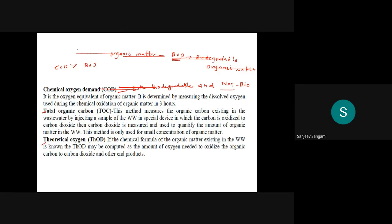BOD is never greater than COD. Even in most standards, if any wastewater is being released into a river body, and you determine both COD and BOD values, the BOD would never be greater than COD — COD will always be higher. The norms state 30 milligrams per liter for BOD and 250 milligrams per liter for COD, so even the norms show BOD is lesser compared to COD.